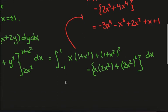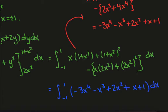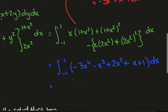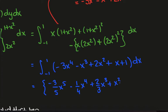So what this integral ends up becoming is the integral from minus 1 to 1 of minus 3x to the 4 minus x cubed plus 2x squared plus x plus 1 dx. And now we just evaluate this in the usual way. What I'll end up with is minus 3 on 5x to the 5, then minus 1 on 4x to the 4, plus 2 on 3x cubed, plus x squared on 2, plus x evaluated between minus 1 and 1.